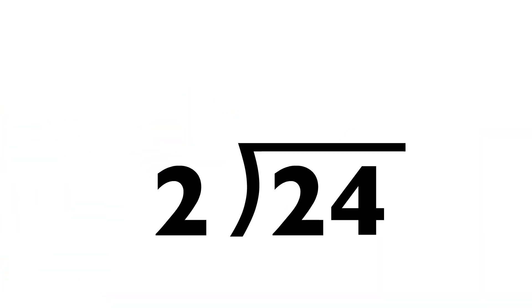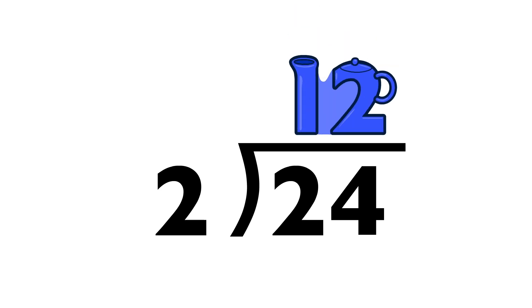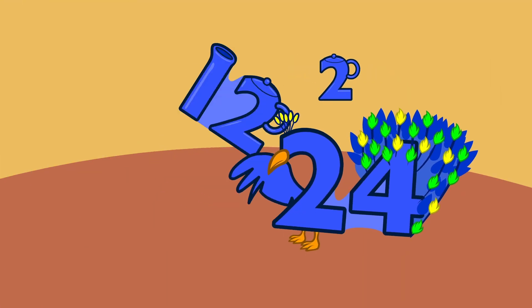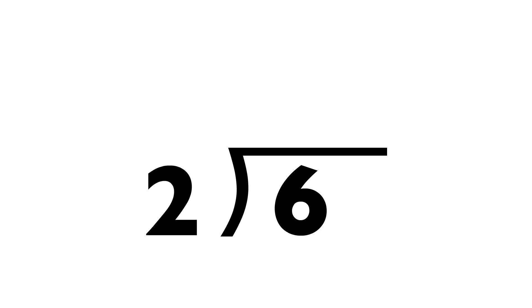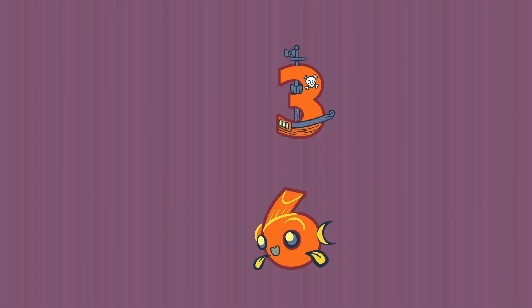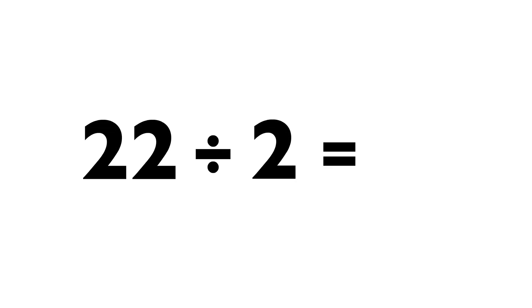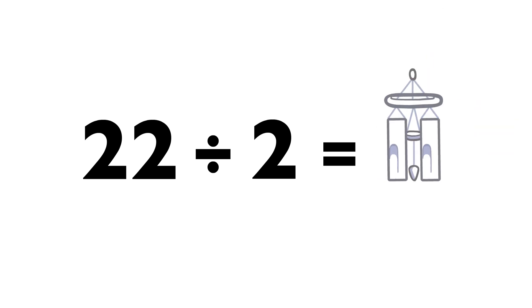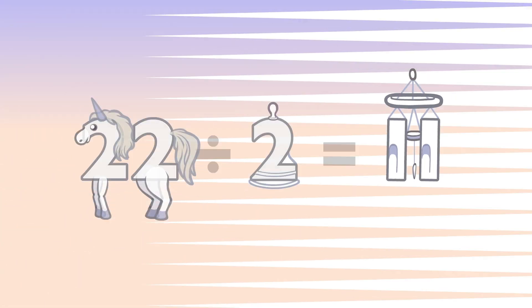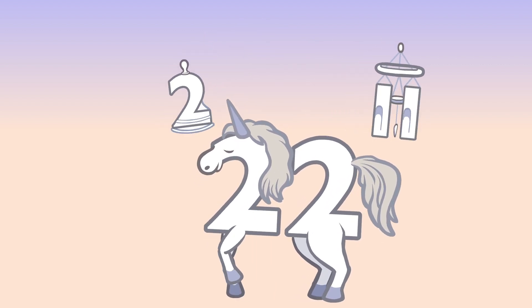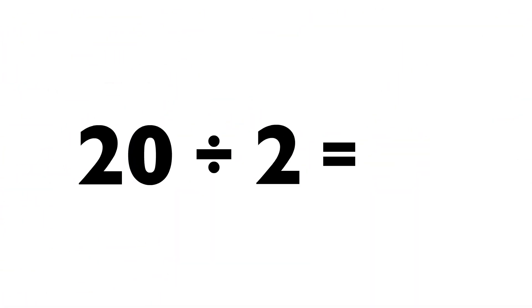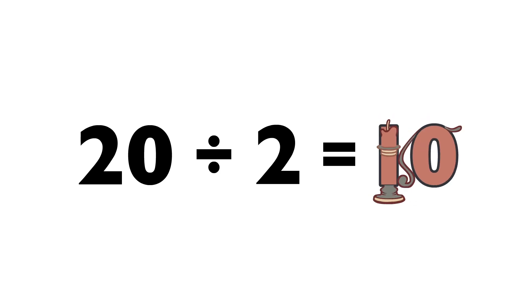Six divided by two equals three. Twenty-two divided by two equals eleven. Twenty divided by two equals ten.